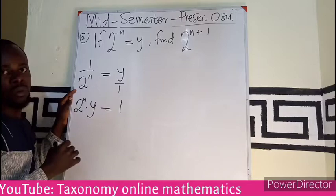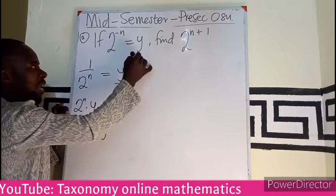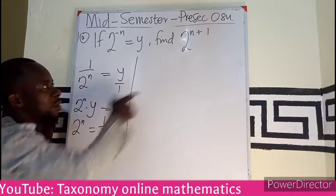But we are looking for this, so obviously we divide it by y. So 2 exponent n is just 1 over y. Alright. So that simply means that I have to rewrite this so that I can get 2 exponent n from this. I am already seeing that.